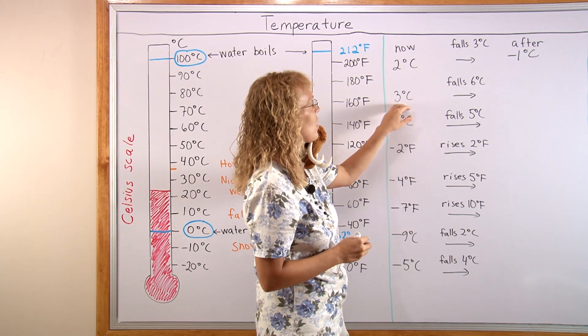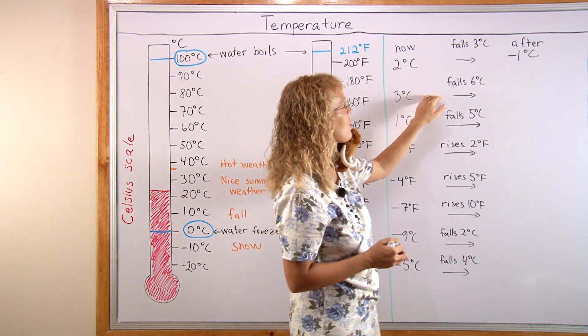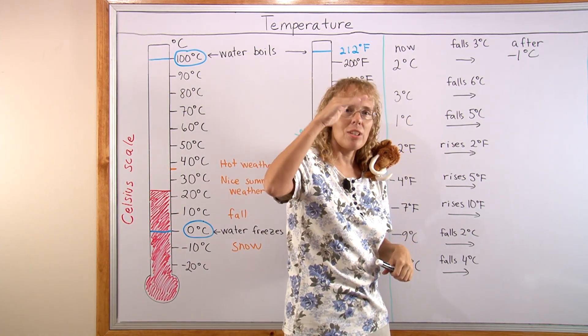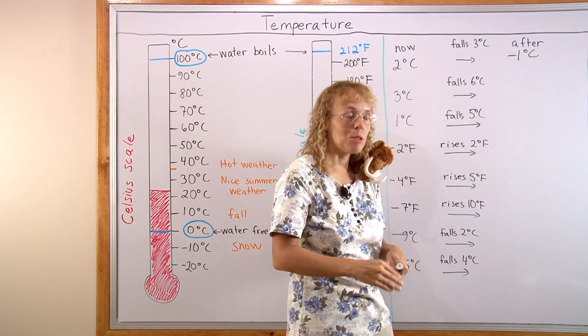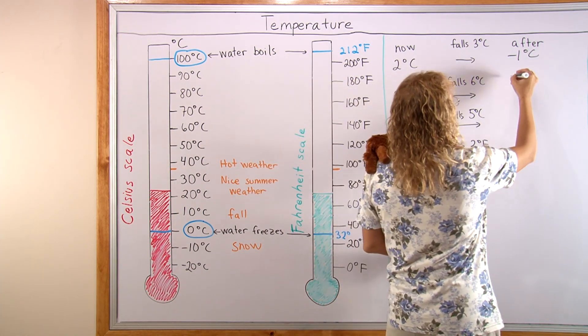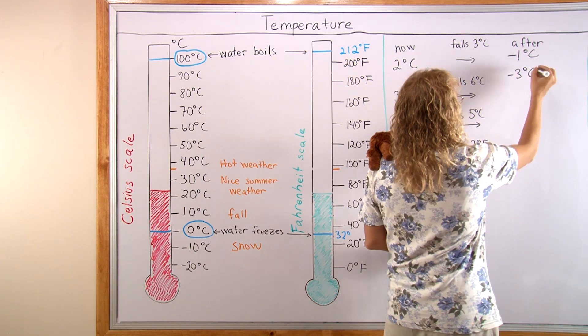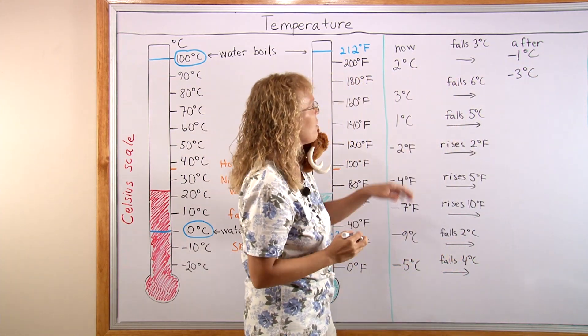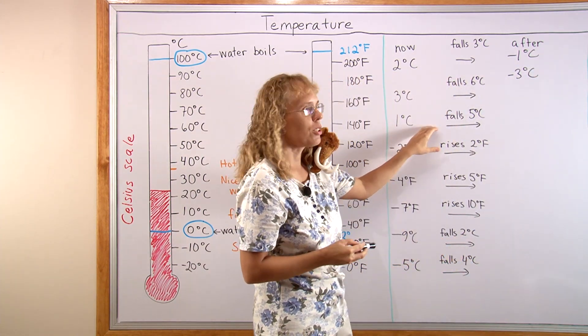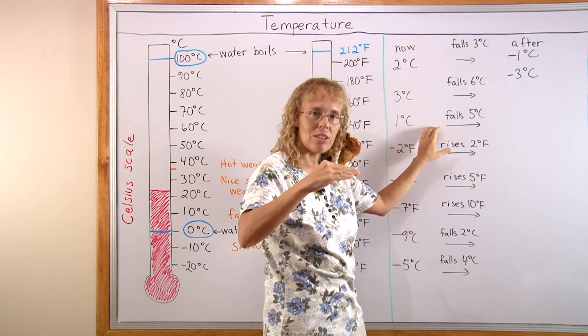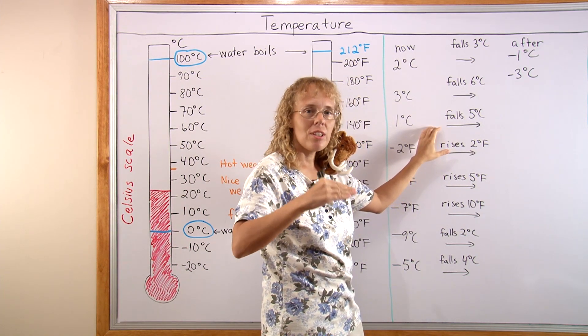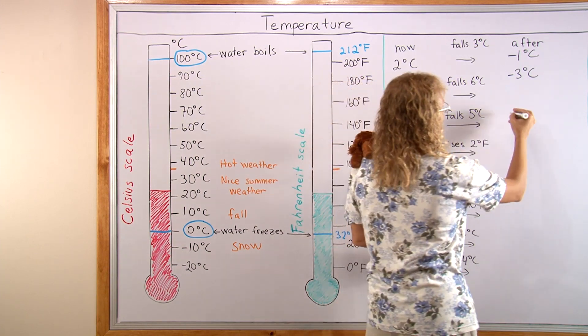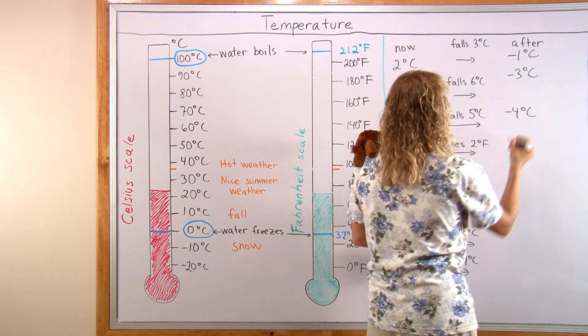If the temperature is now 3 degrees Celsius and it falls 6, we are at 3. We go down 3 degrees to 0 and another 3 degrees below 0. So we are at minus 3 degrees Celsius. If it is 1 degree Celsius and it falls 5, first you go down to 0, then 4 more degrees down to negative 4, minus 4 degrees Celsius.